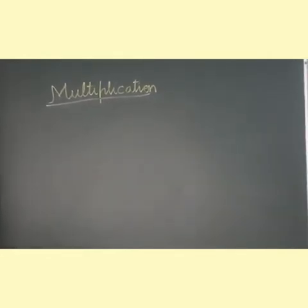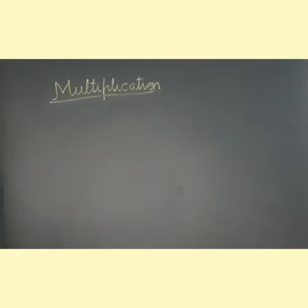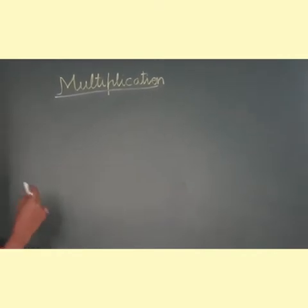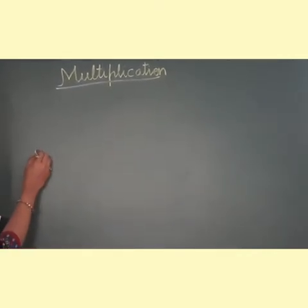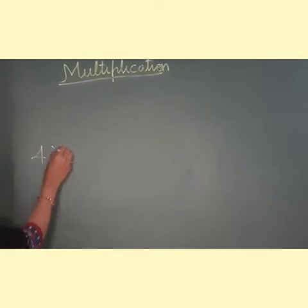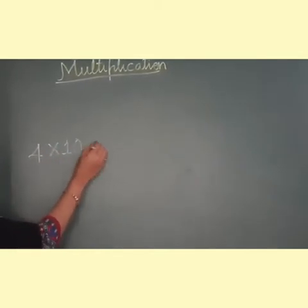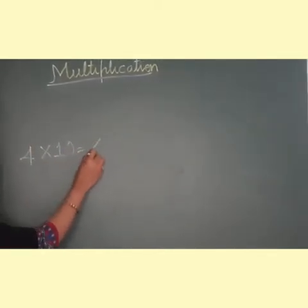Children, today we are going to learn how to multiply a number by 10. Multiply a number by 10 means taking 10 times that number. For example, if I say 4 multiplied by 10, you all know 4 tens are 40.